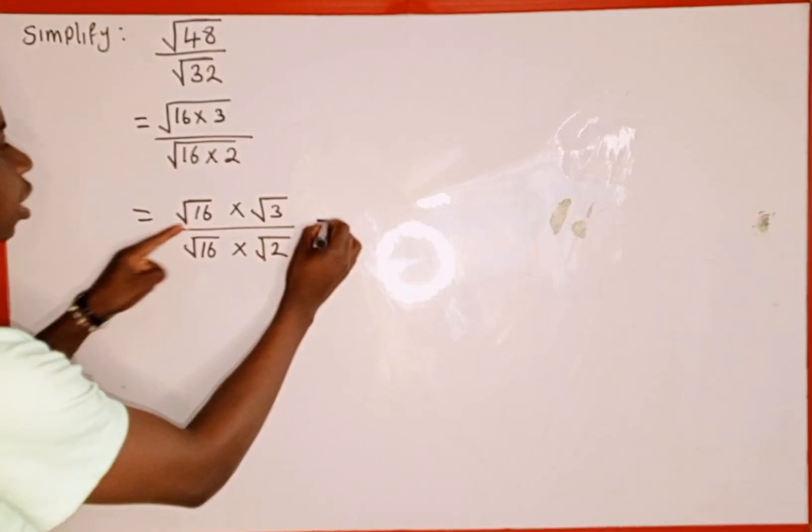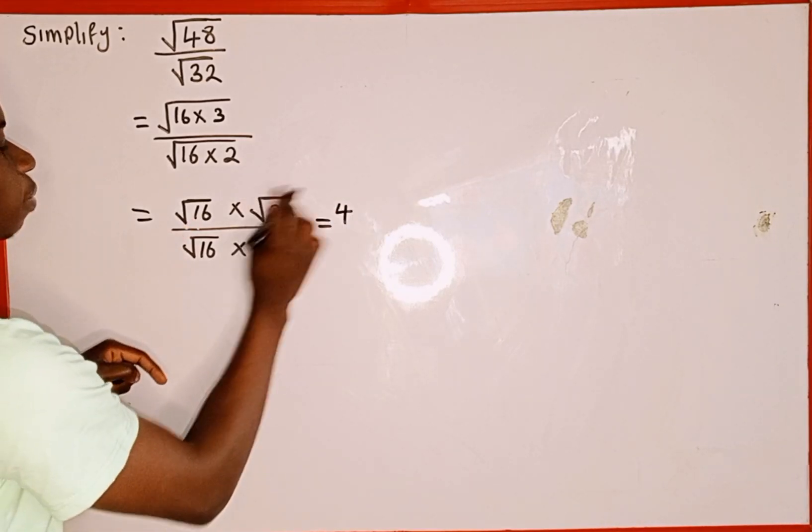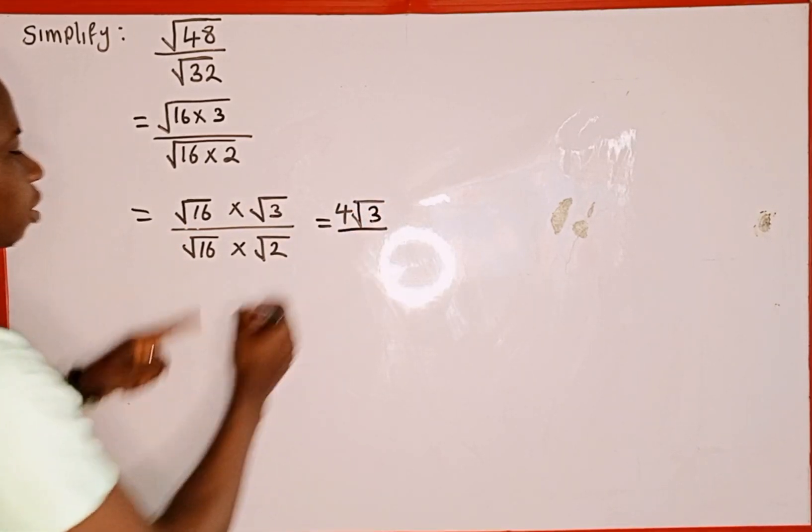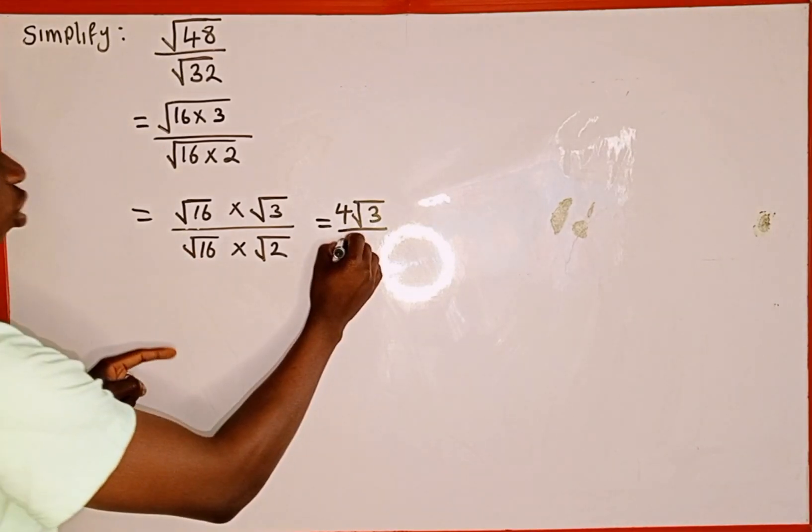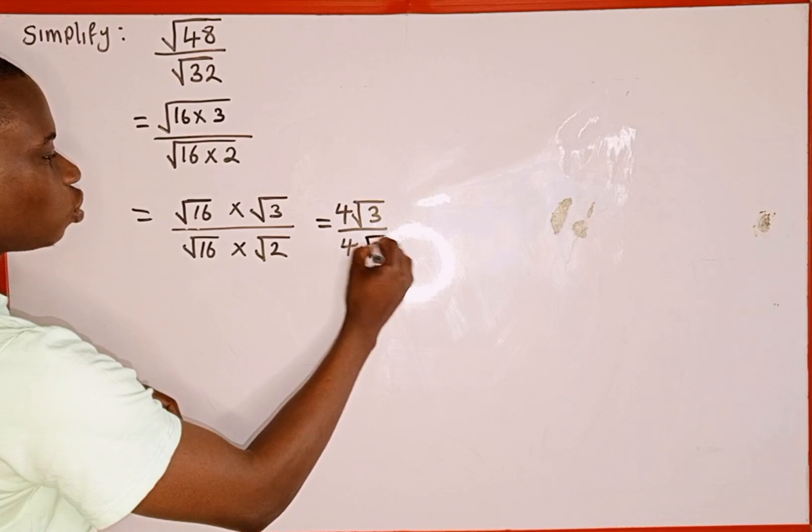Then square root 16 is the same as 4. If you take the square root of 16 is 4. Then multiply by square root 3 is going to give us 4 square root 3. Then divided by square root 16 is also 4. Then multiply by square root 2 is going to give us 4 square root 2.